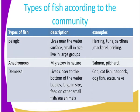Then we have the demersal fish. These fish live closer to the bottom of water bodies and are large in size. They feed on other small fish or sea animals. Examples include the cod, catfish, haddock, dogfish, skate, and ray.